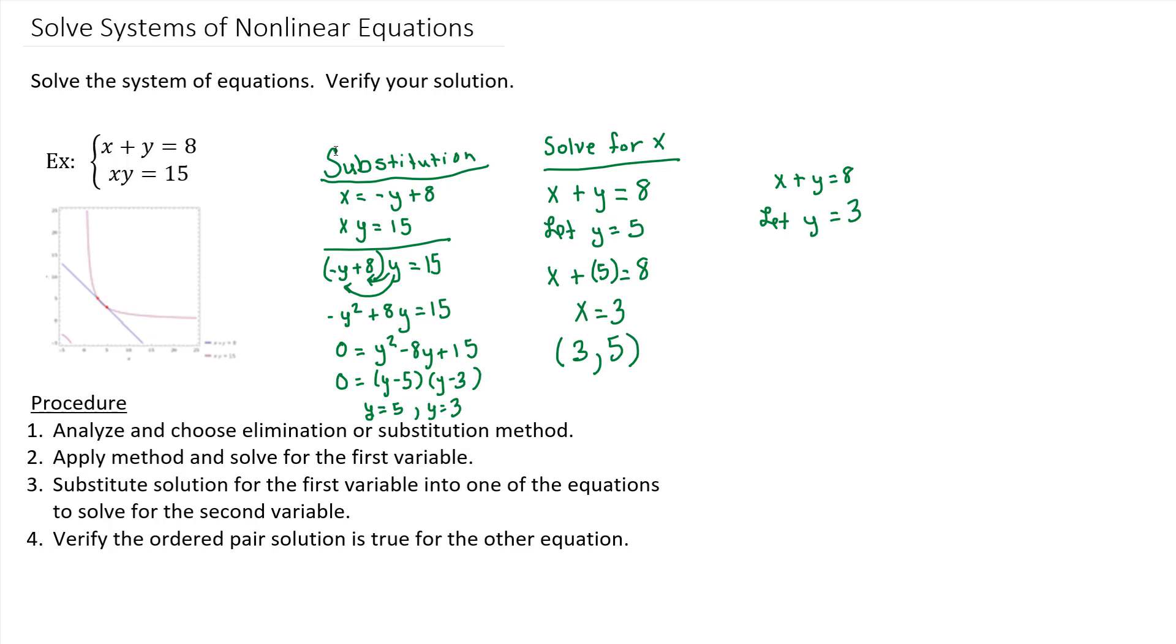Then we would go through and we do the same thing. If Y is 3, we get X plus 3 is 8. Subtract 3 from both sides. We get X is 5. So it appears we get the solution 5, 3.